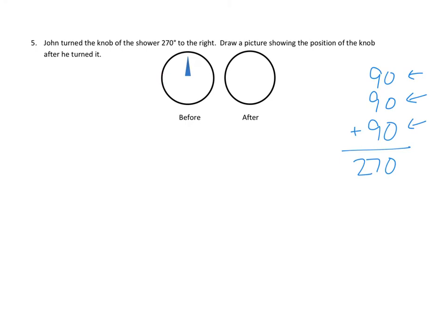So, I think we could say that at the end, we would be pointing this way. If we turn this knob one, two, three quarter turns to the right, or 270 degrees, we would be pointed over here to the left. Great.